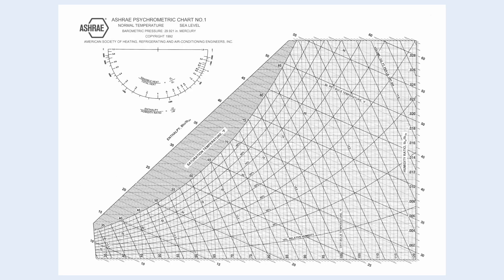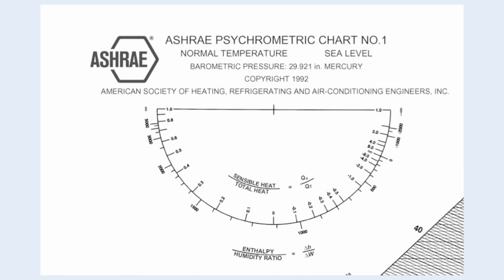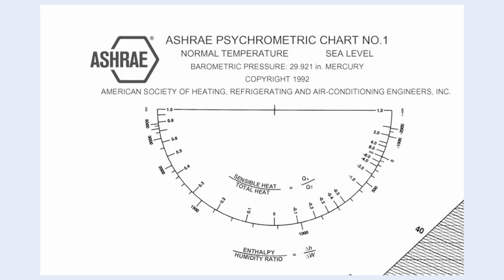To find the off-coil enthalpy, we need the psychrometric chart. At the top left corner, we have the compass. First, it represents the sensible heat ratio, SHR, in percentage.